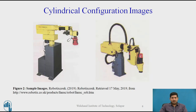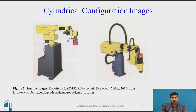Here are some images of the cylindrical configuration — they appear to be Fanuc robots, which is evident from the color. Most top manufacturers have a color strategy. These are quite old machines, and even if you do come across them, these are probably older robots which have been refurbished and upgraded. This configuration is very unlikely to be in current active use.